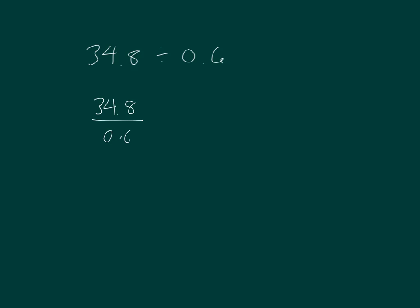How can we express the divisor as a whole number? Right, we multiply it by a fraction equal to 1. Let's multiply it by 10 over 10. That's 348 over 6.